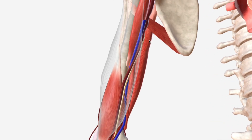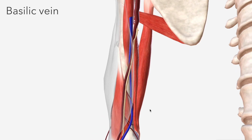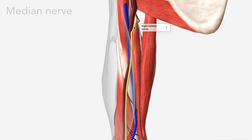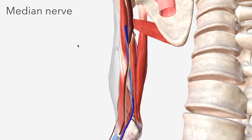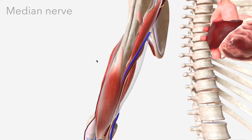As with many of the arteries of the upper limb, the brachial artery moves essentially in congruence with a vein — in this case, the basilic vein. And you'll see tightly adhered to the brachial artery is the median nerve.